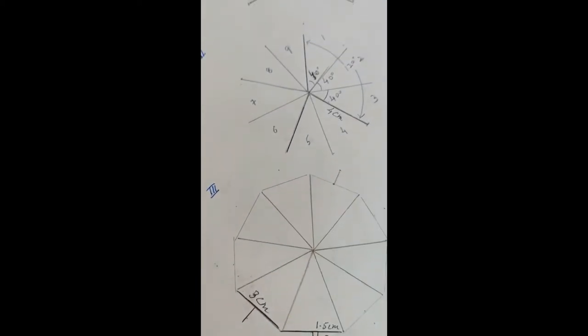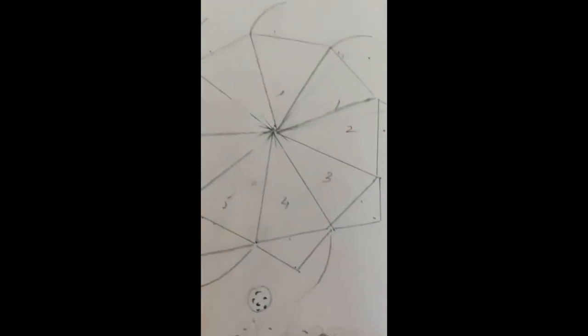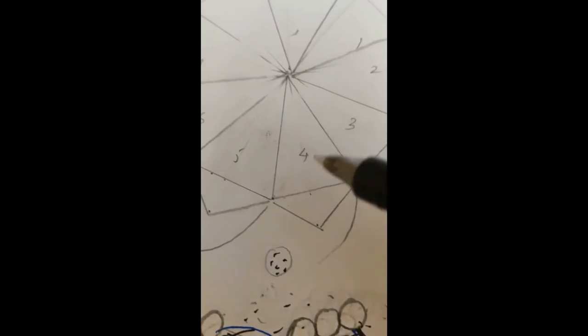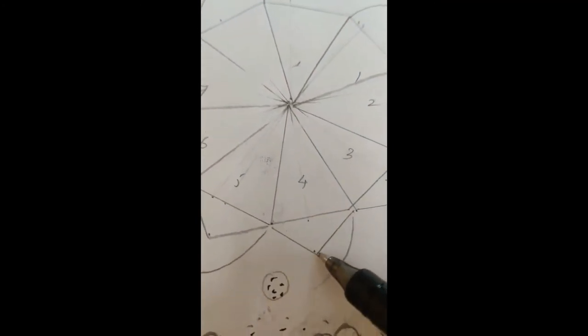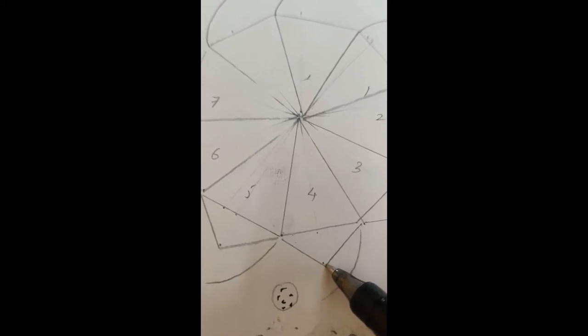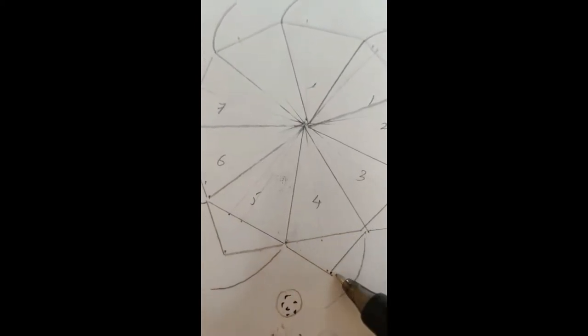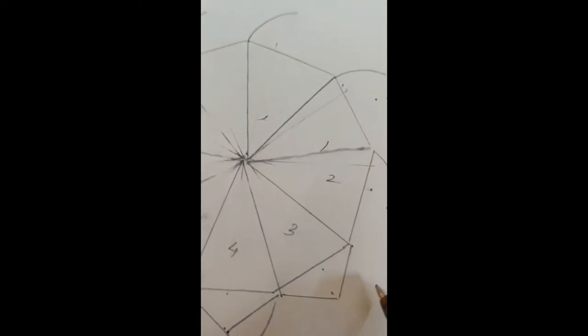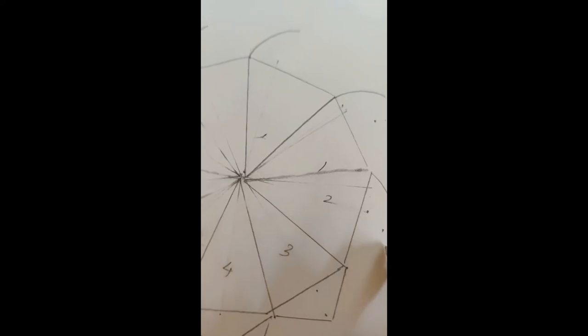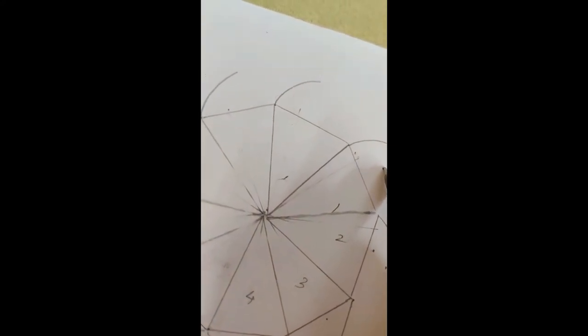Now next step will be you are going to make small triangles using the end part of this line. So you are joining the two parts and you have got one more triangle. Similarly, you are going to make these triangles, complete all the triangles. I have rubbed off the lines. They all were at 1 centimeter.